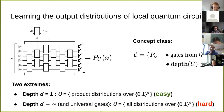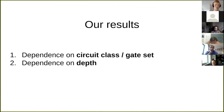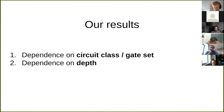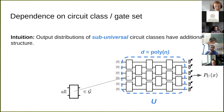This motivation for putting up these two extreme regimes suggests that somewhere in between there's a transition from easy to hard, and it's our job to nail down exactly where this transition happens. We have these two parameters — gate set and depth — and let me now present our results on both fronts, along with gaps and open questions.